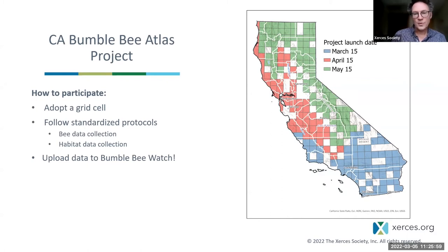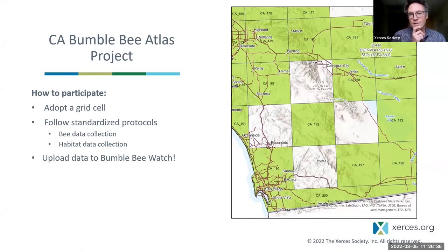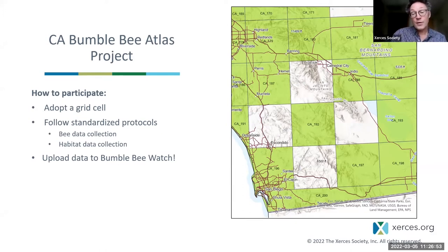If you live in Southern California in the blue areas, we encourage you to start your work as early as March 15. Much of the Central Valley and Central and Northern Coast, we're saying April 15. Montane and Northern areas, May 15 would be the time to start. Each cell has a unique number — you'll select, for example, CA 192 or 197. The gray background cells are ones we're not emphasizing for collecting this year, as we randomly selected a subset. We encourage you to work in one of the green cells, though we'd be happy to have data from the gaps too.